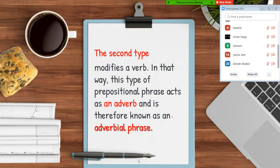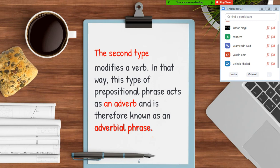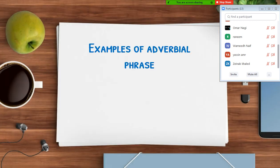That was the first type — when the prepositional phrase modifies or describes a noun. The second type: when it modifies a verb, it acts like an adverb. We call it an adverbial phrase. Let's check some examples of adverbial phrases.